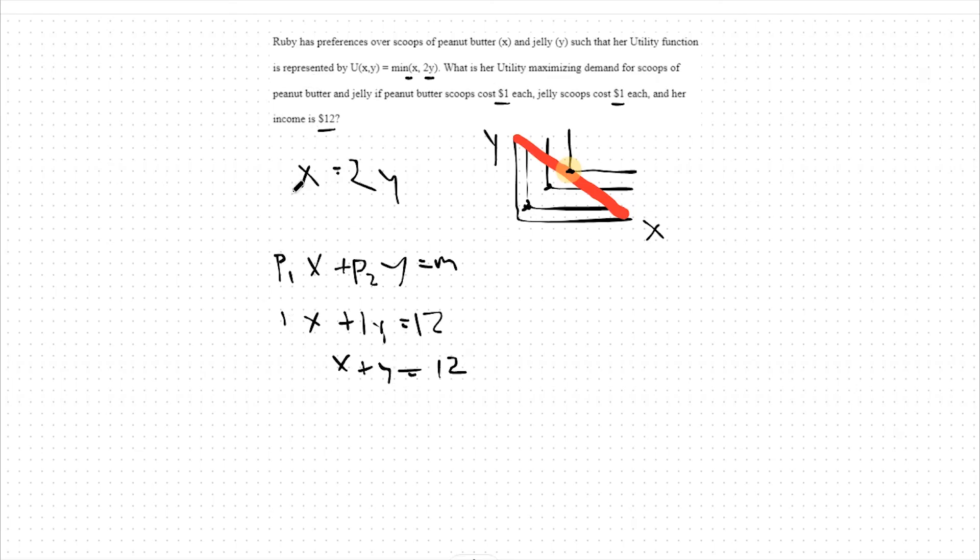As we found above, x equals 2y. So I can plug in for x, 2y. This means 2y plus y equals 12. So 3y equals 12 or y equals 4.